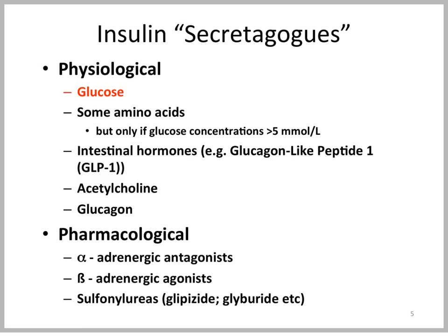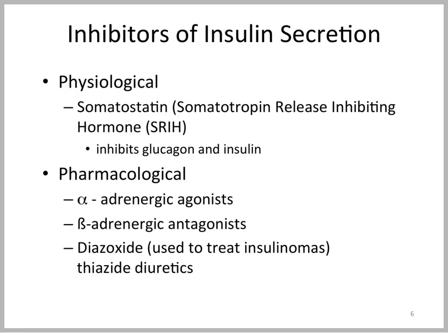There are also pharmacological insulin secretagogues, for instance, the alpha-adrenergic antagonists, beta-adrenergic agonists, and the sulfonylureas, which we use clinically in diabetic cats. A physiological inhibitor of insulin secretion is somatostatin, which is secreted from the delta cells of the islets of Langerhans, and it inhibits both glucagon from the alpha cells and insulin from the beta cells. Pharmacological inhibitors are alpha-adrenergic agonists, beta-adrenergic antagonists, and thiazide diuretics. A special thiazide diuretic is diazoxide, which is used to treat insulin-secreting tumors, called insulinomas, clinically.